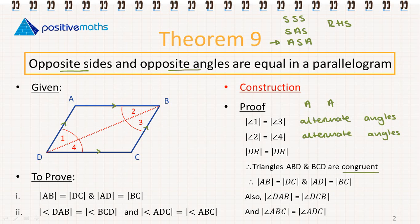The side BD is common to both triangles because it's a diagonal. So the diagonal is common to both.